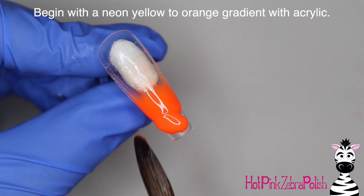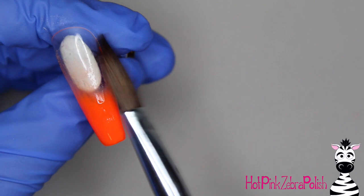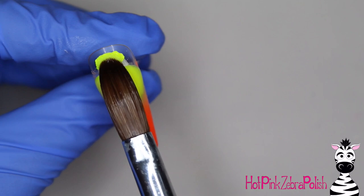To start this nail, I'm going to begin with a neon gradient of orange and yellow. So I have orange at the tip and then yellow up above near the cuticle area, and the silly thing about this is that you almost can't see any of that gradient in the end because the haunted house takes over the entire nail.